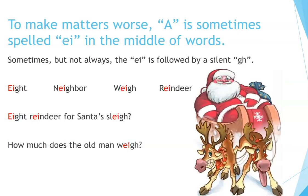To make matters worse, A is sometimes spelled E-I in the middle of words. Sometimes, but not always, the E-I is followed by a silent G-H. Eight. Neighbor. Weigh. Reindeer. Ate reindeer for Santa's sleigh? How much does the old man weigh?